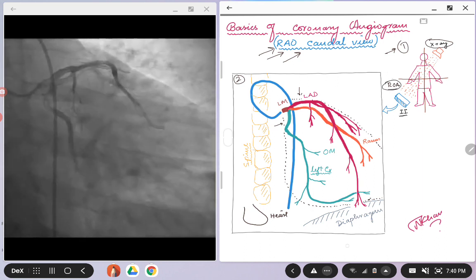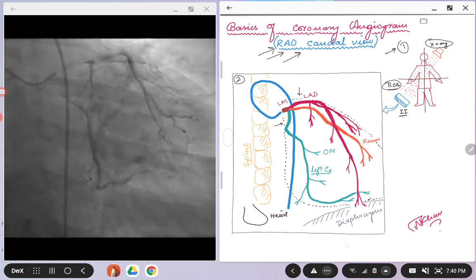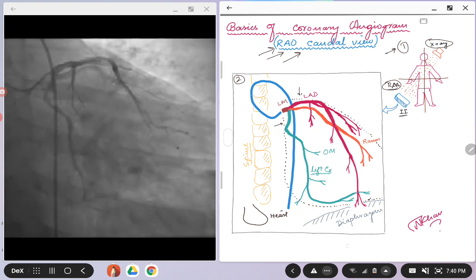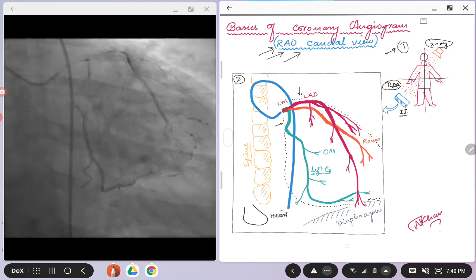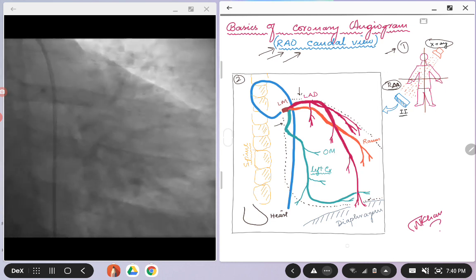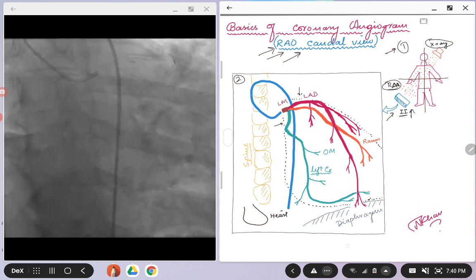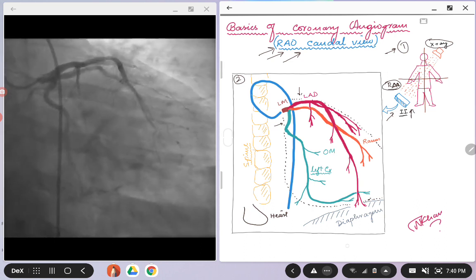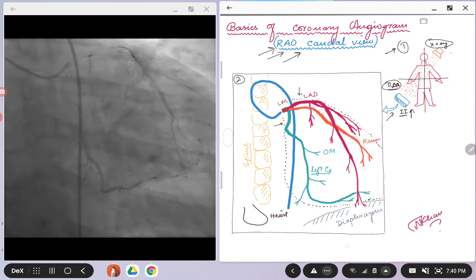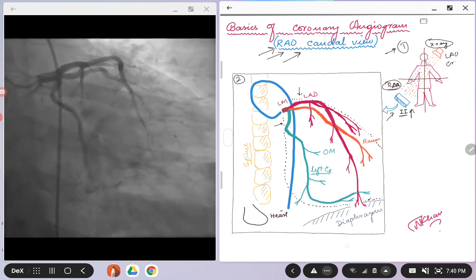So in this case, the RAO view, right anterior oblique view which is in the caudal position, so RAO caudal view, the x-ray source will be in the opposite direction which will be LAO cranial.